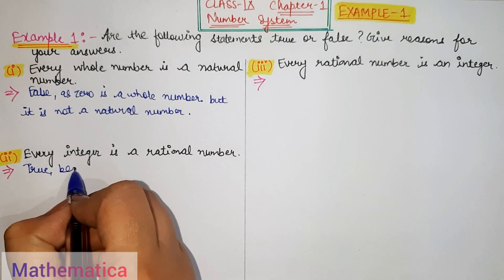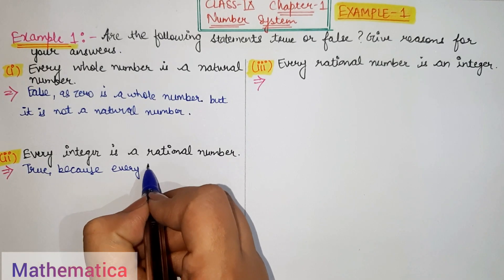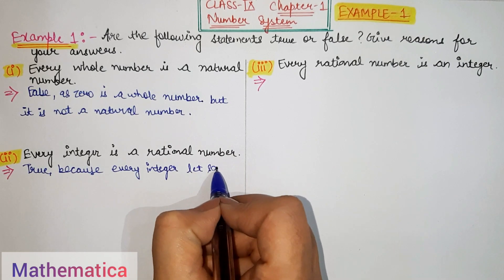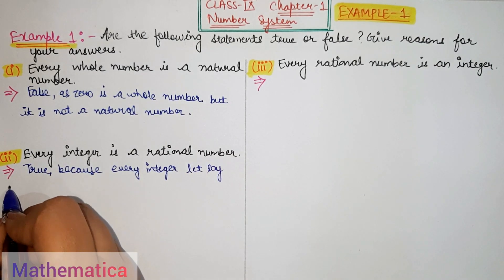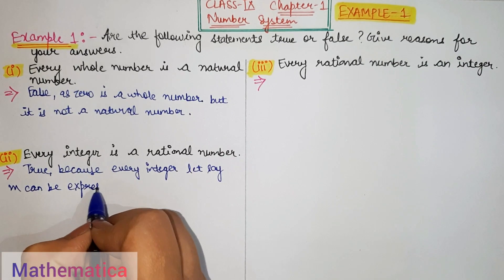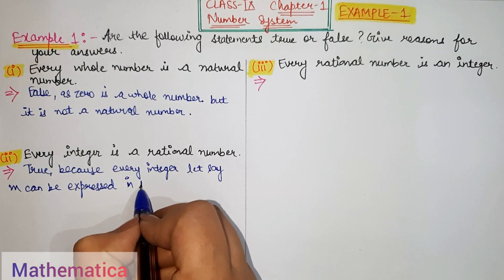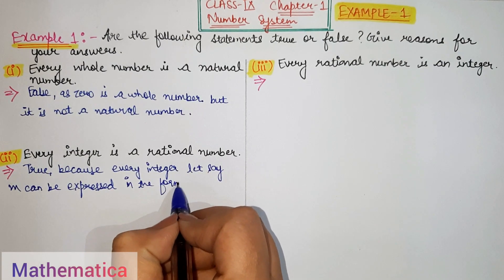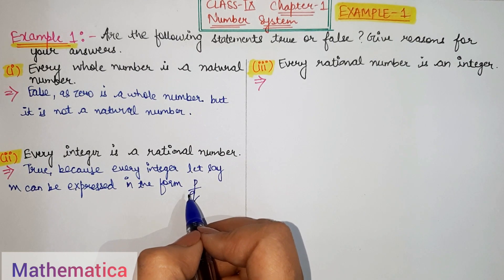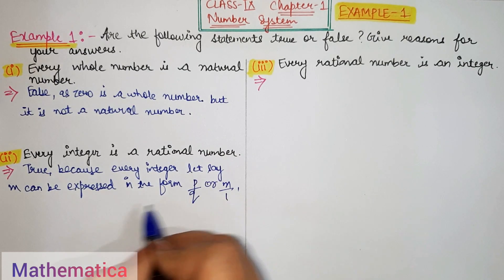Because every integer, let's say M, can be expressed in the form, in which form we can express? We can represent in P by Q form or M by 1.